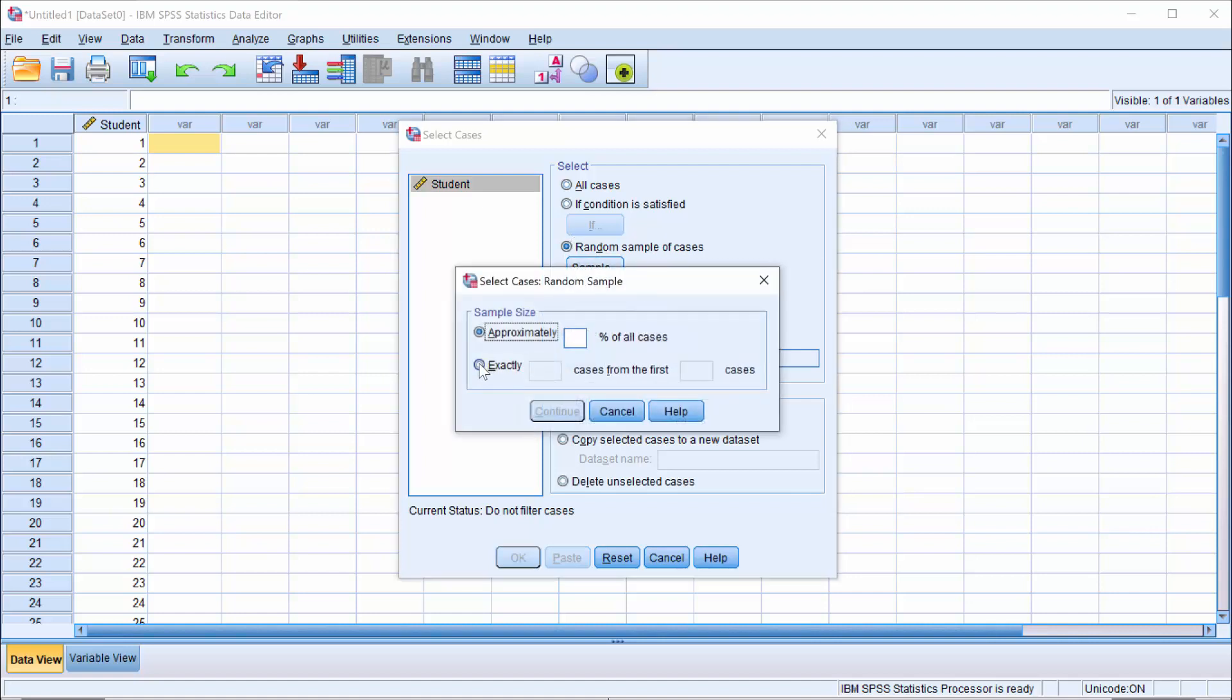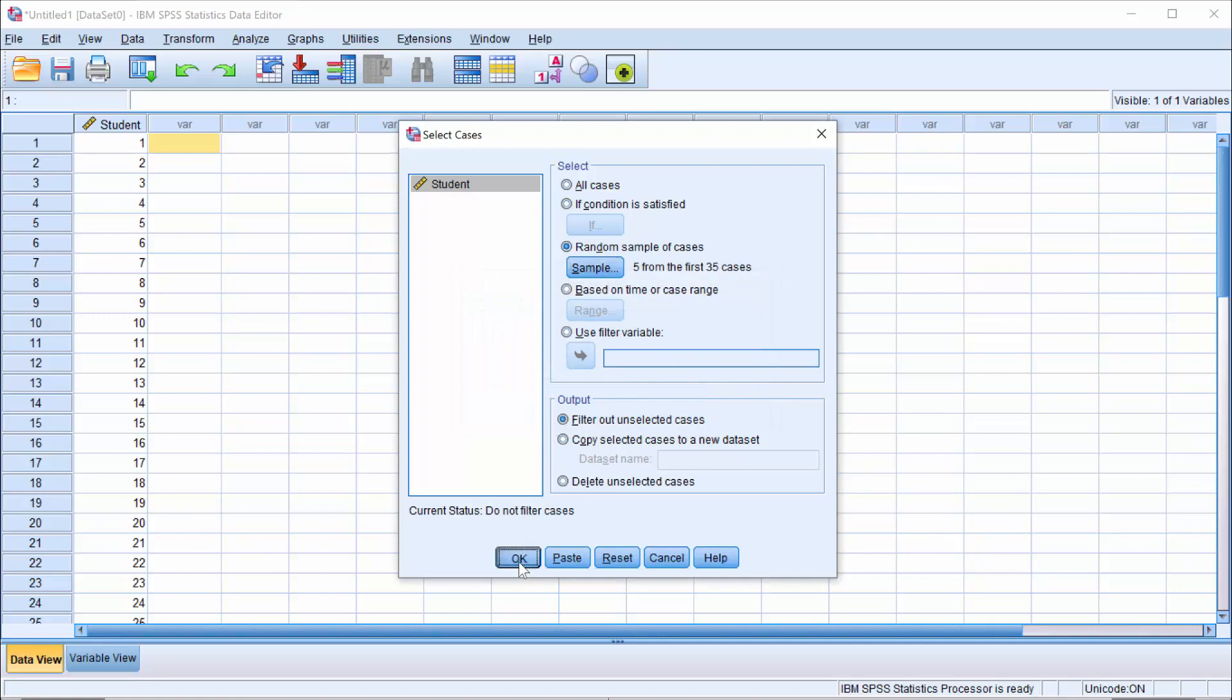If I click that and then click on sample, I can say I want to pick exactly five cases from the first 35 and then say continue and then say okay.